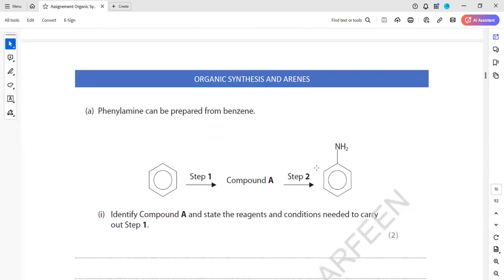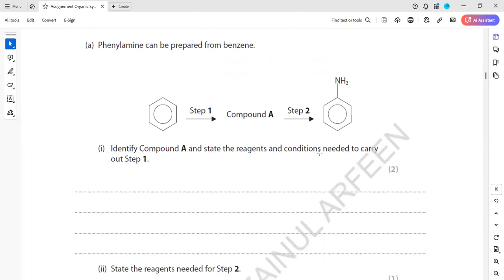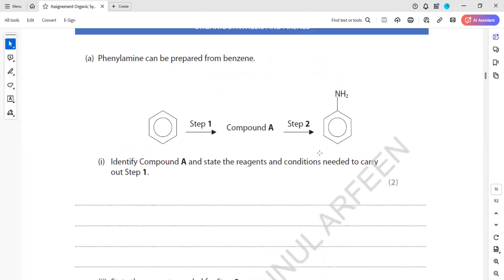Phenylamide can be prepared from benzene as you can see here. Identify compound A and state the reagent and the condition to carry out step one. We just want to convert into this. So if you want to produce phenylamide first, what it is converted into, it will convert you to nitrobenzene. And from nitrobenzene, we do a reduction. So compound A should be nitrobenzene and the reduction of nitrobenzene gives phenylamide.